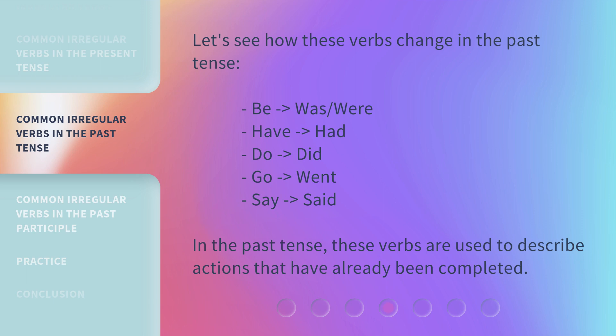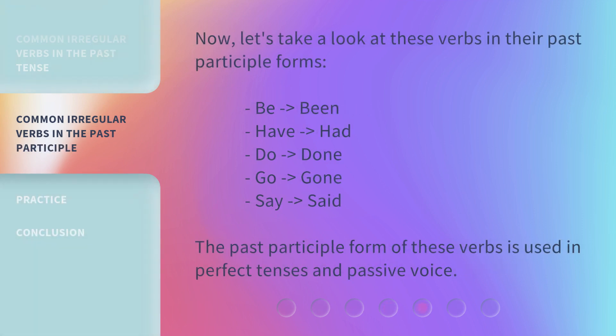Now, let's take a look at these verbs in their past participle forms. Be to been, have to had, do to done, go to gone, say to said. The past participle form of these verbs is used in perfect tenses and passive voice.